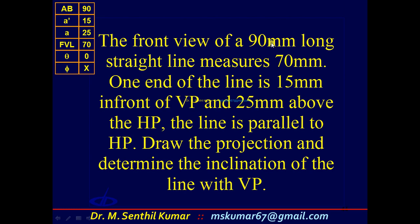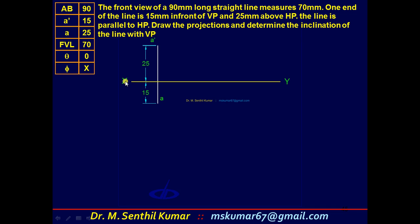But the front view measures 70mm, which means the line is actually parallel to HP and inclined to VP. If the line is parallel to HP and inclined to VP, in the top view you can see the true length and true angle φ. The task is to draw the projection and determine the inclination of the line with VP. As usual, the first step is to draw the XY line and mark one end 25mm above and 15mm in front.